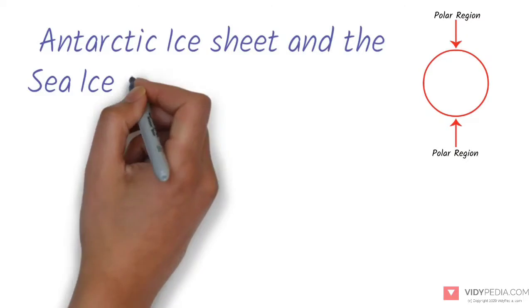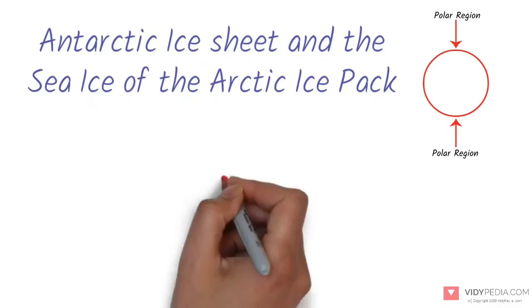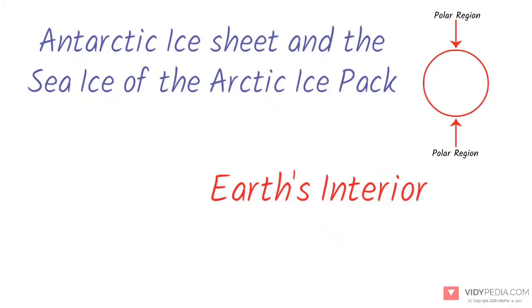The majority of Earth's polar regions are covered in ice, including the Antarctic ice sheets and the sea of ice of the Arctic ice pack. Earth's interior remains active,